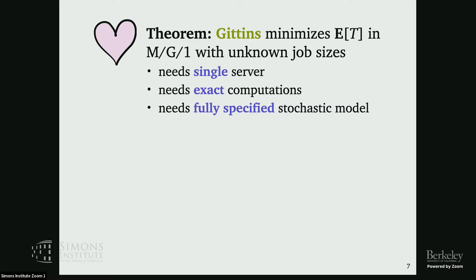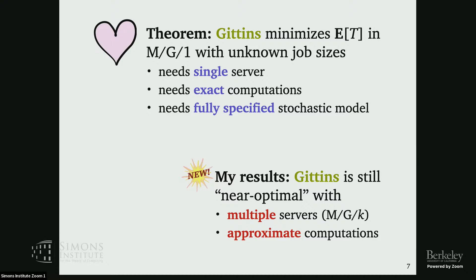In my thesis, I studied this question and got two out of three. We showed that for some definition of near-optimal — actually different in each case — if you do the natural generalization of Gittins in a multi-server setting, basically taking the K best ranks and putting those in your servers, then you get near-optimal mean response time. And if you only compute your Gittins indices within some multiplicative approximation ratio, you end up with the same approximation ratio in a near-optimality result.